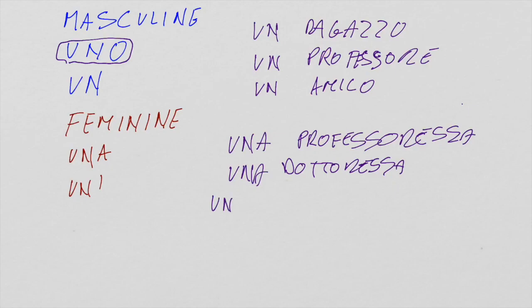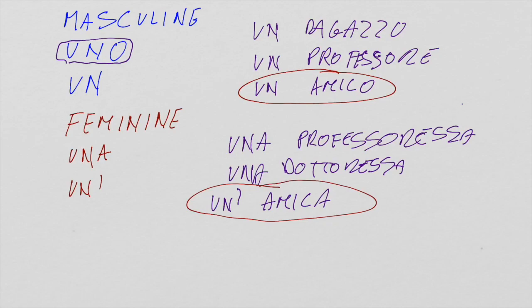And we use UN with the apostrophe only in front of feminine nouns starting with vowels. UN'AMICA. So pay attention here. UN AMICO and UN'AMICA. UN AMICO is without the apostrophe because AMICO is masculine, and you have only UNO or UN for masculine. UN'AMICA is with apostrophe because AMICA is feminine. And in the case of feminine nouns, you have UN plus apostrophe in front of a vowel.